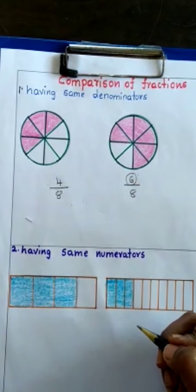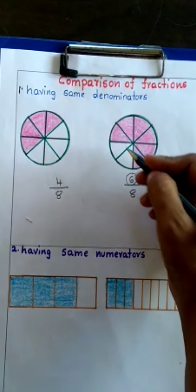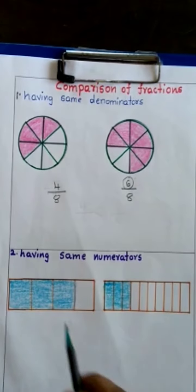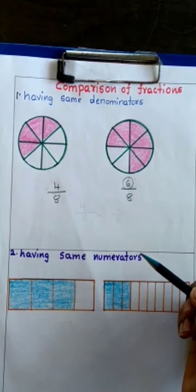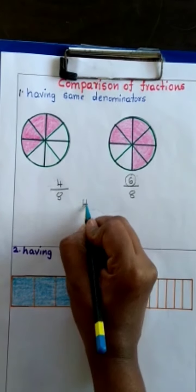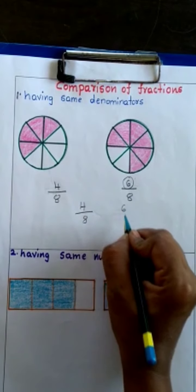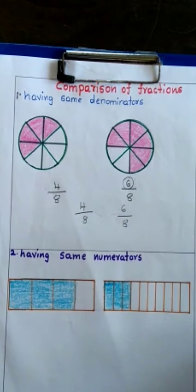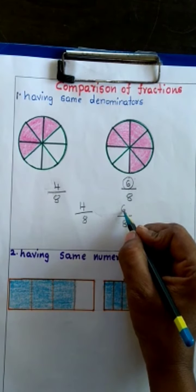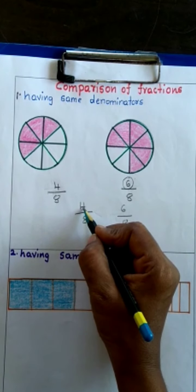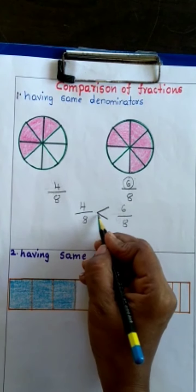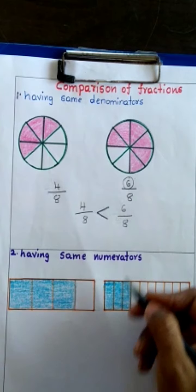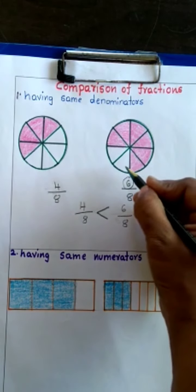Since the denominator is the same, we concentrate on the numerator. Numerator 6 is greater than numerator 4. So 4/8 < 6/8, meaning the second child colored more parts of the spinner.